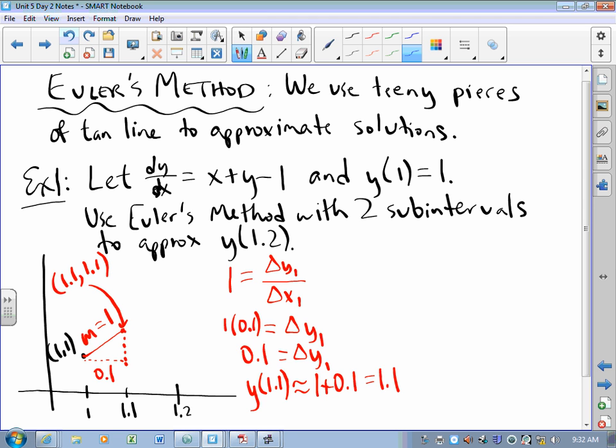So at (1.1, 1.1), what is the slope of the tangent line? 1.1 plus 1.1 minus 1. That's 1.2. And so I'm going to draw a piece of tangent line with a slope of 1.2.